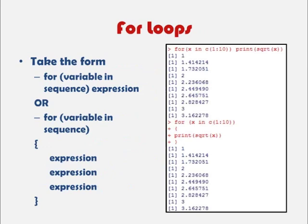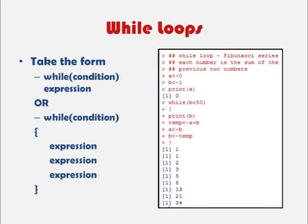So a for loop takes the form of for followed by a variable in a sequence and an expression or a series of expressions. So in the example provided here, we have for x, when x is equal to 1 through 10, we want to print the square root of x. And so we can get this print out. And there are multiple ways of writing this syntax.